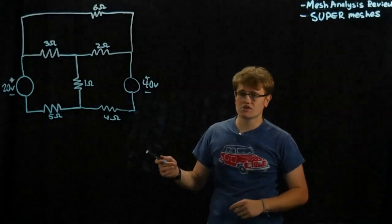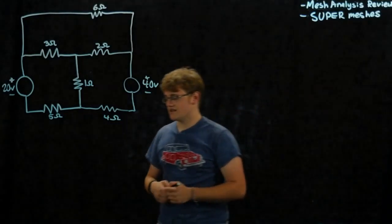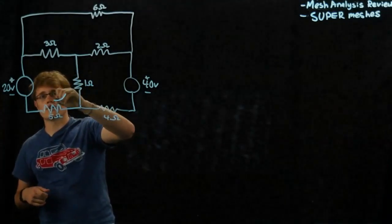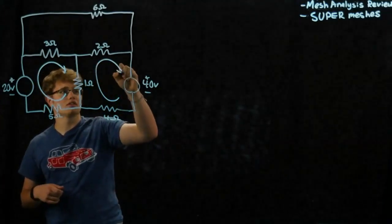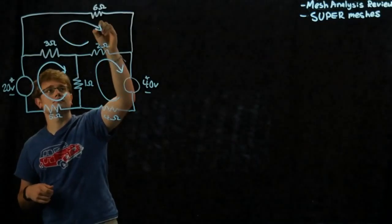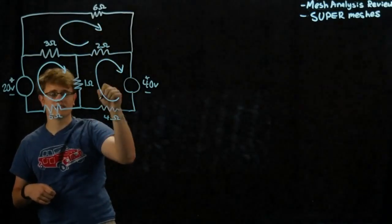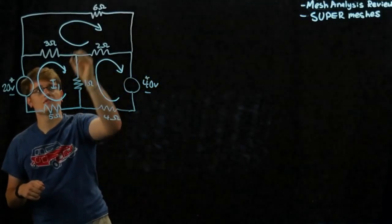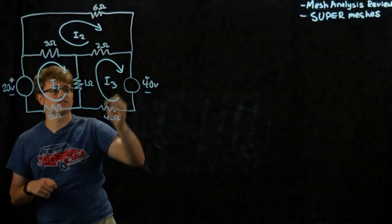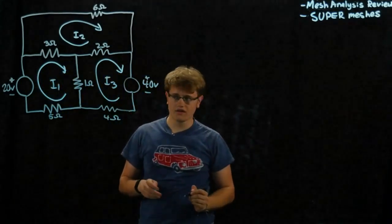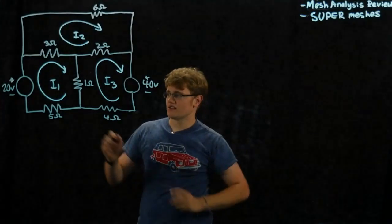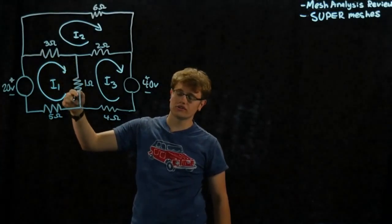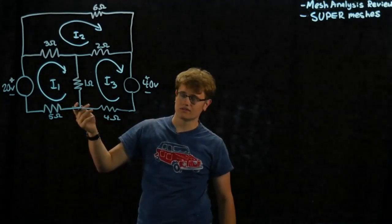This right over here is a normal circuit we can perform mesh analysis on. If you remember how to do mesh analysis, we know that we have to make our meshes, which are Kirchhoff's voltage law loops around the closed loop of wire in this circuit. There are three of those, and we're going to name them I1, I2, and I3. Kirchhoff's voltage law tells us that the voltages, if added correctly around a closed loop, should equal zero — and that's how we do mesh analysis.